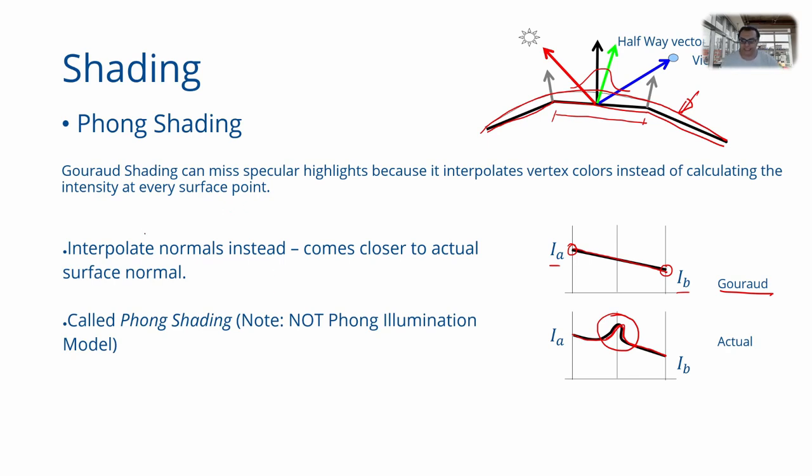In Phong shading, instead of interpolating colors from vertices, you instead take the vertex normal, pass the vertex normal to the rasterizer and the normals are interpolated by the rasterizer to every pixel using the exact same scanline interpolation. Then compute color at each pixel using those per pixel normals.